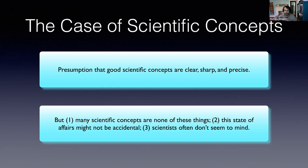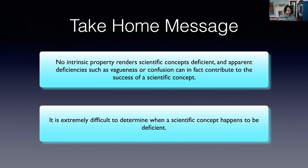The take-home message of this new project is that there are presumably no intrinsic properties that render scientific concepts deficient. The deficiency of a scientific concept is not grounded in any intrinsic property. And apparent deficiencies such as vagueness or confusion can in fact contribute to the success of a scientific concept — so they do not render the scientific concept deficient.